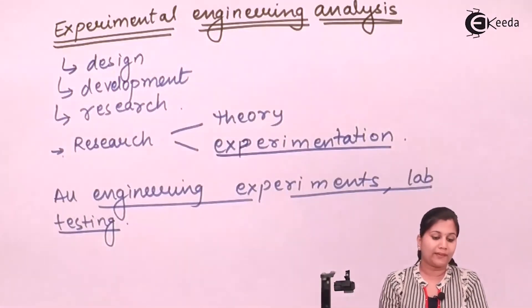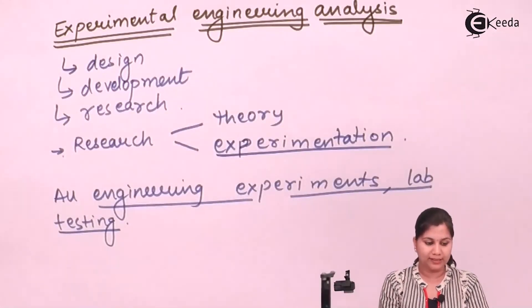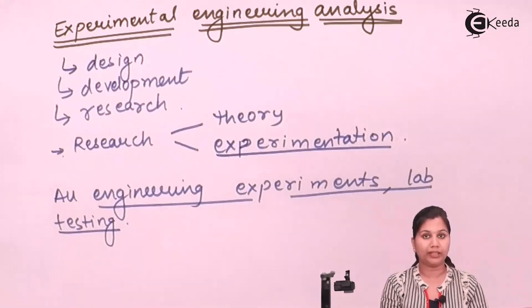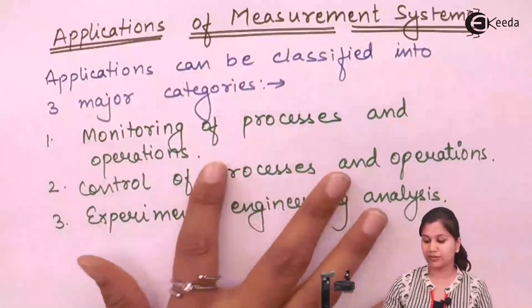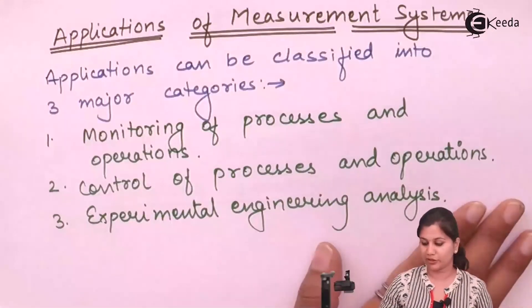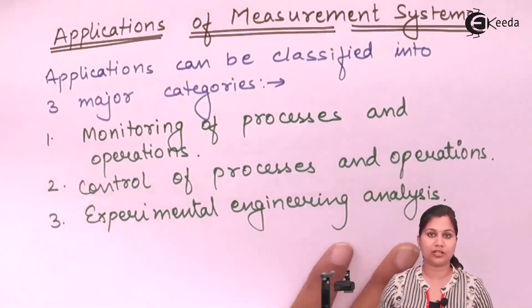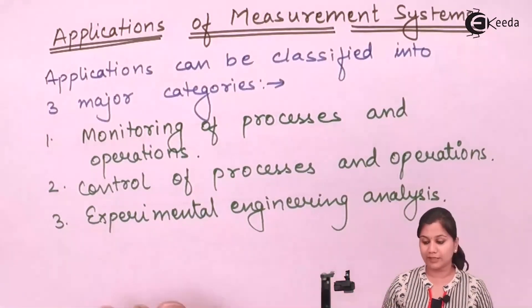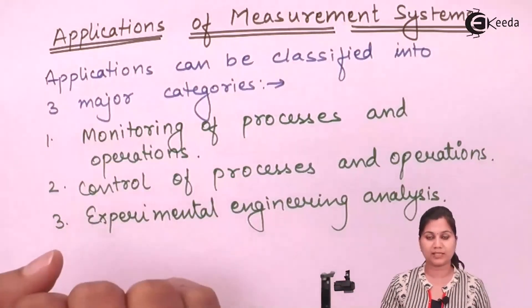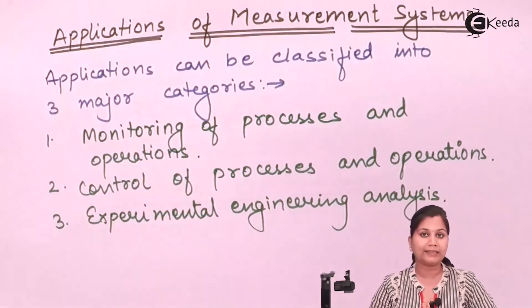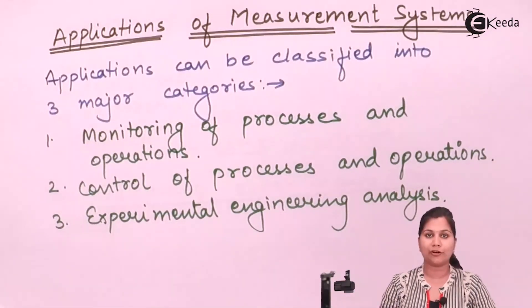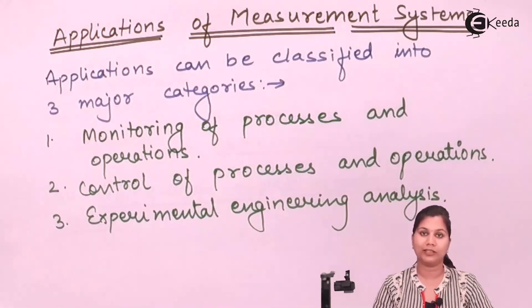So we have seen that the applications of measurement systems can be divided into three major categories: monitoring of processes and operations, control of processes and operations, and experimental engineering analysis. We have also seen some examples of measurement systems under each of these categories. I hope that the topic of applications of measurement systems is now clear to you. Thank you.